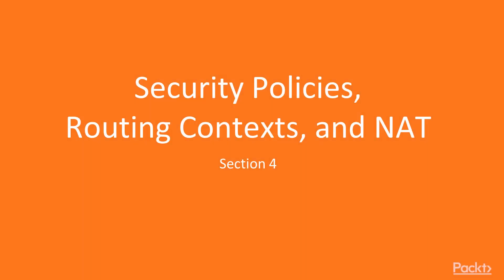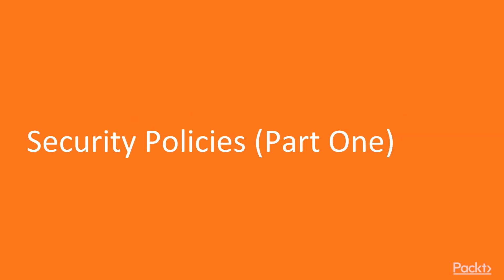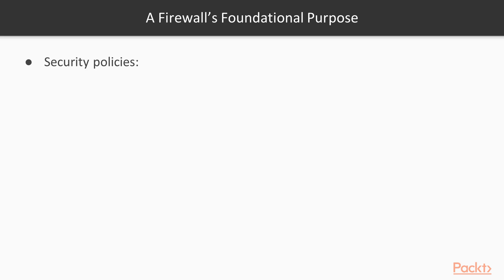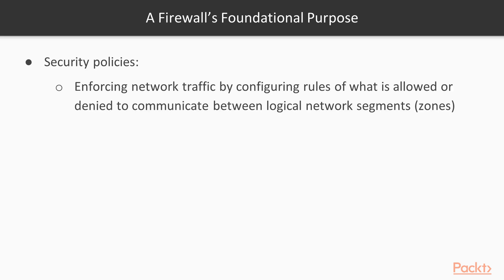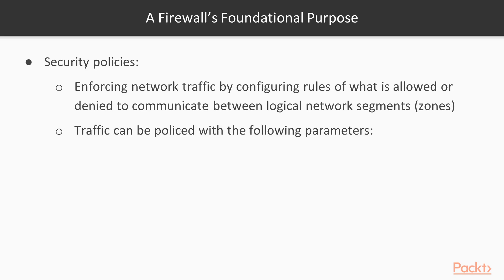Let's continue on to Section 4, Security Policies, Routing Context and NAT. So in Section 4, we're going to begin discussing security policies. This is the reason why you put a firewall in the environment — you want to isolate networks and put traffic rules behind each one, so you can enforce what is allowed to go from one side of the network to the other. This is why we have firewalls.